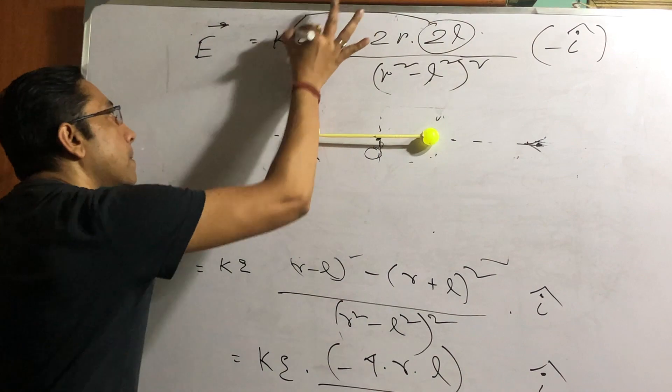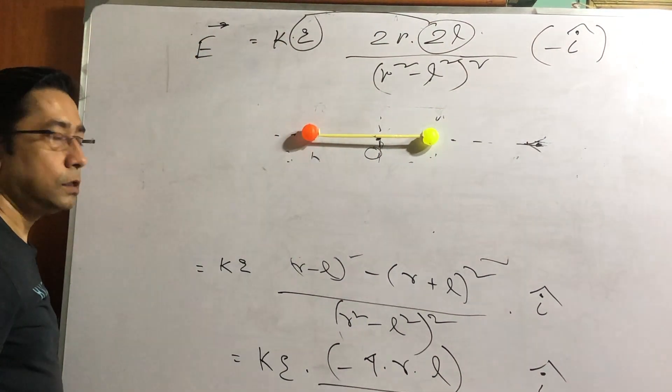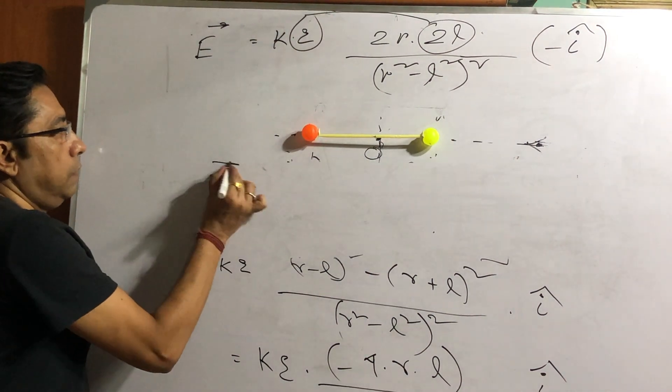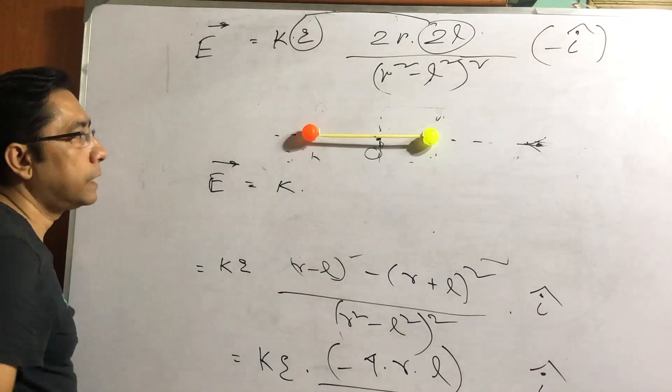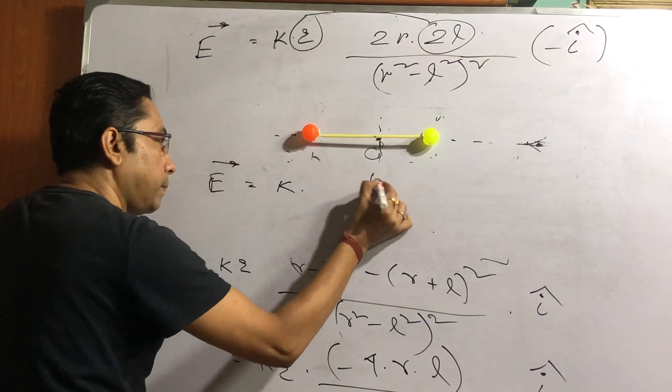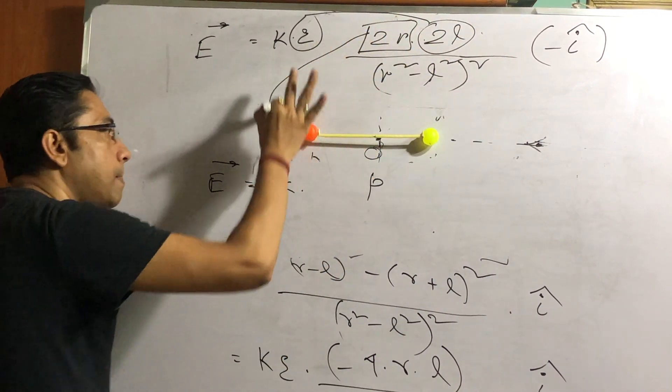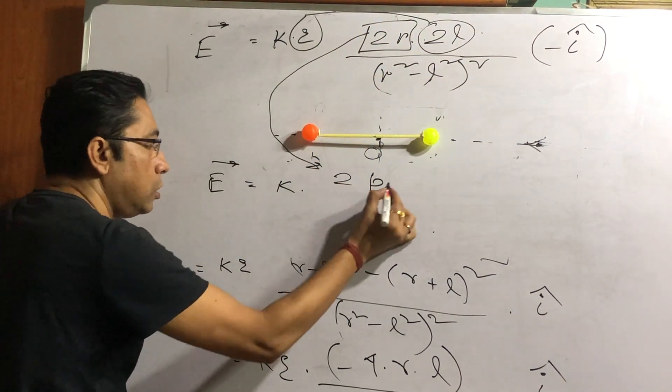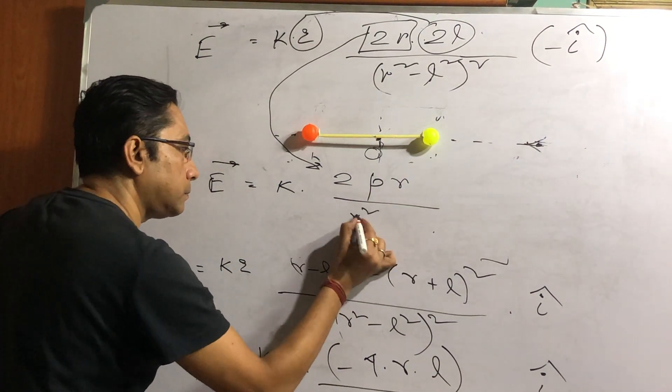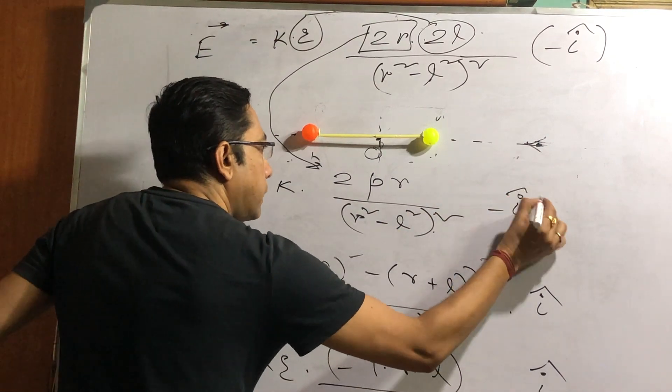Say this: Q into 2L is dipole moment P. So E vector, net electric field on the axis. K. Let us combine Q into 2L as P. Let us write. So 2R remains still. Let us write it here: 2 and R divided by (R square minus L square) whole square, minus i hat. This is the formula, electric field due to a dipole.